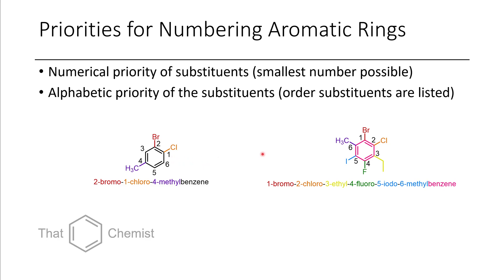What we want to do as the biggest priority is have the smallest sum possible. If we'd started counting at bromine, we go 1, 2, 3, 4, 5. That would give us 1, 2, that's 3, 3 plus 5 is 8. So that would give us a sum of 8.